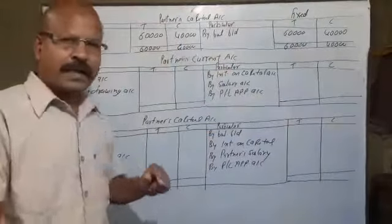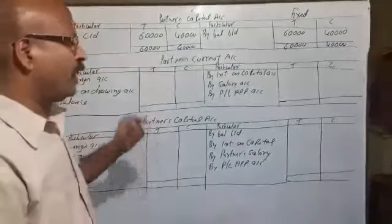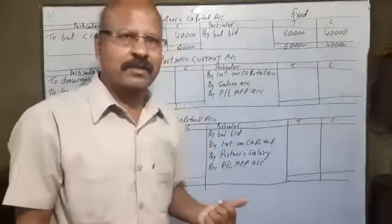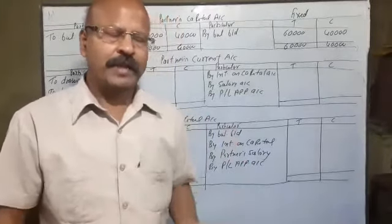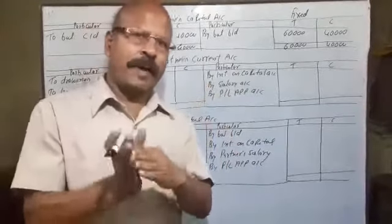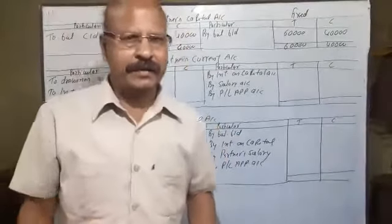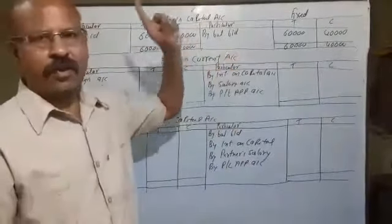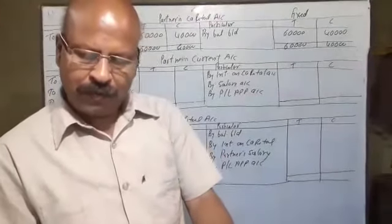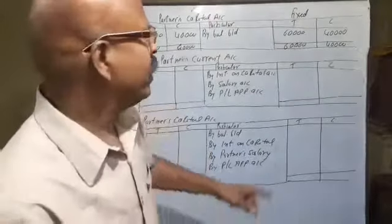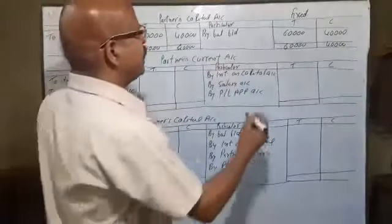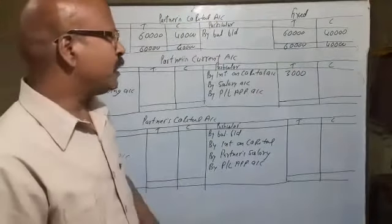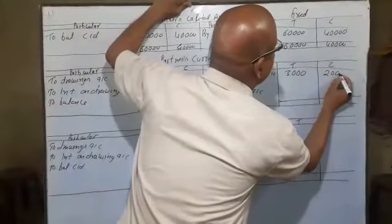Second account is partner current account. When capital account is fixed, we will prepare the partner current account. After the partner capital, we will execute the other transactions. In this situation, we have partner current account. There is interest on capital. The partner capital is 60,000 and 40,000. The interest rate is 5% per annum. Capital interest is 60,000 times 5%, which is 3,000. Second, 40,000 times 5%, which is 2,000.